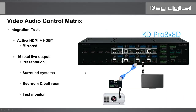Each of the eight outputs has simultaneously active HDMI and HDBaseT ports — they are mirrored, showing the same content at the same time if utilizing both connectors per output. This gives you a total of 16 live outputs, perfect for presentation applications such as a conference room with a projector at the front and a monitor on the side, or a master bedroom and bath where you want to use two displays without using two separate outputs — essentially a built-in 1x2 distribution amplifier on each output.